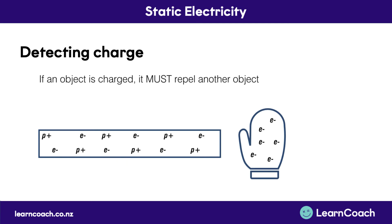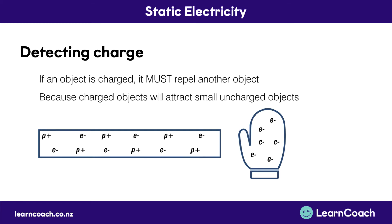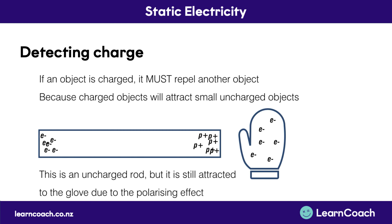Now we're going to talk about detecting charge. If an object is charged, it must repel another object with the same charge. Charged objects will also attract small uncharged objects. Our charged object here is the glove, and our small uncharged object is the rod — we know it's uncharged because it's got the same amount of positives as negatives. When the negative glove is brought in, the positives in the rod are attracted to that side and the electrons are repelled. This is what we call a polarised object — all it means is that there's charge separation within one object, with the left side negative and the right side positive. The uncharged rod is still attracted to the glove due to this polarising effect.